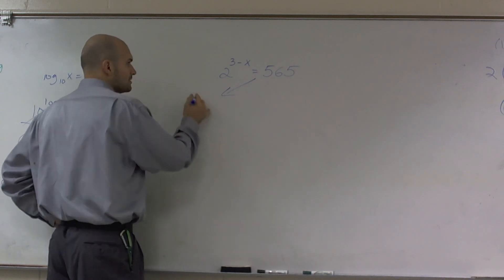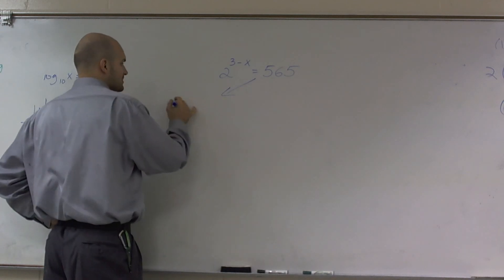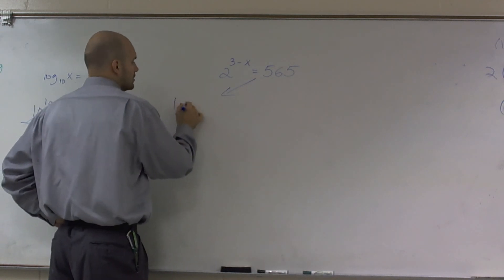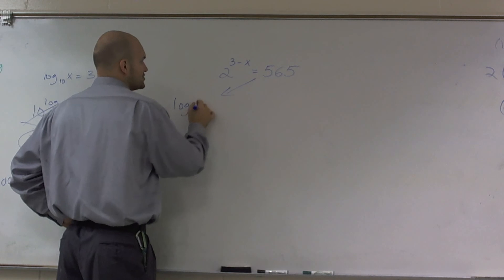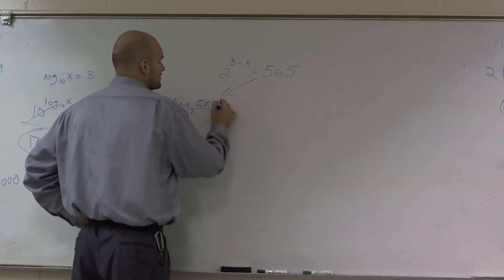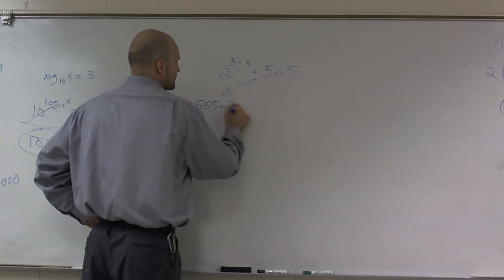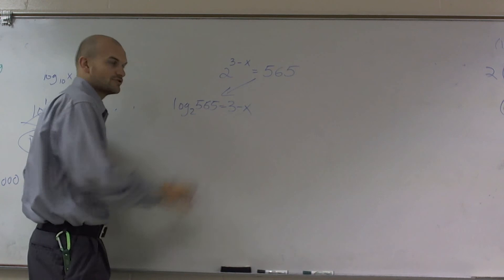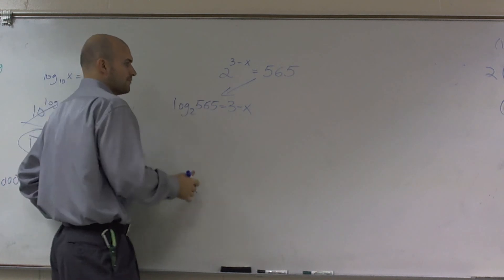The first way is to convert it to logarithmic form. So that's going to be log base 2 of 565 equals 3 minus x. Transfer it to logarithmic form.